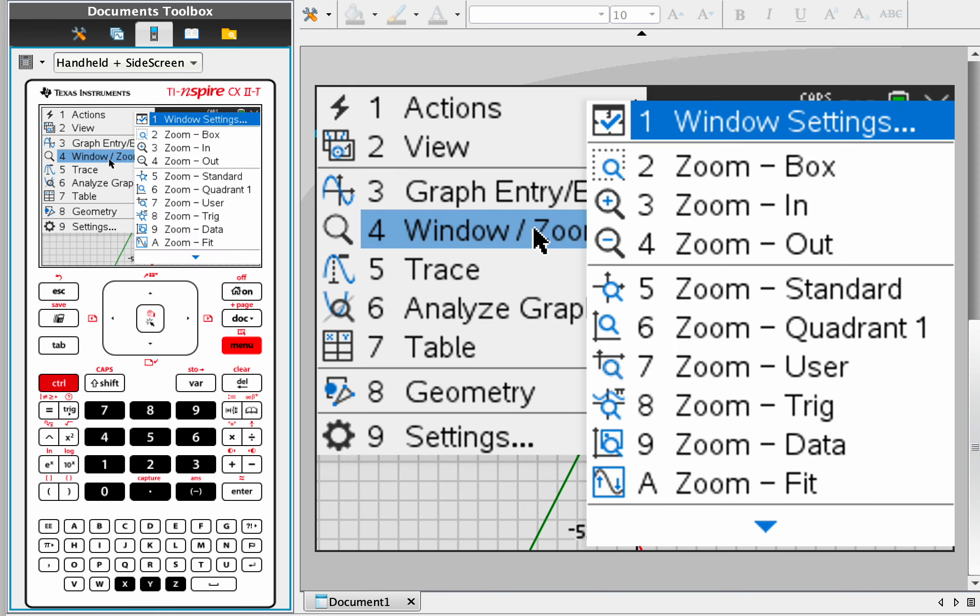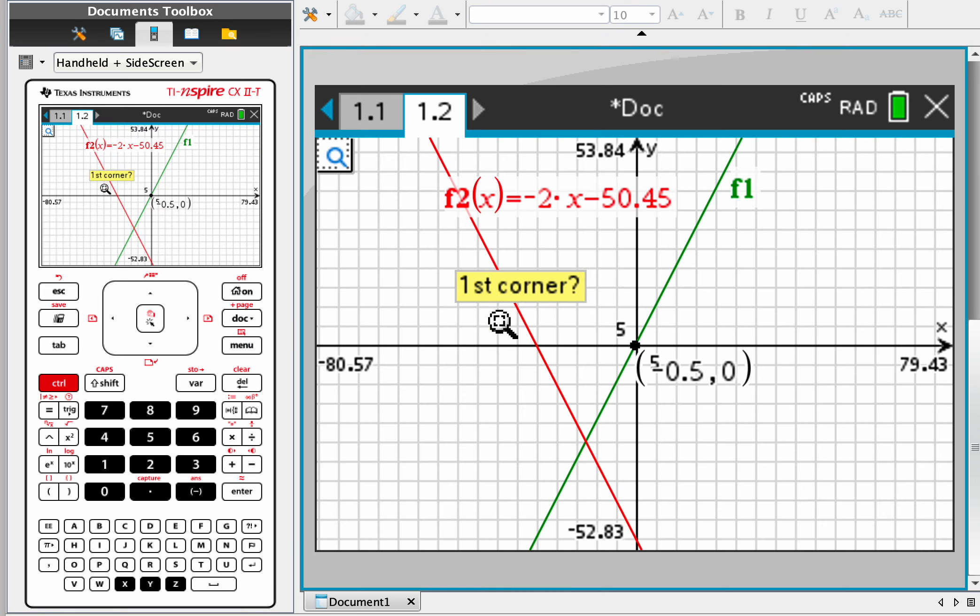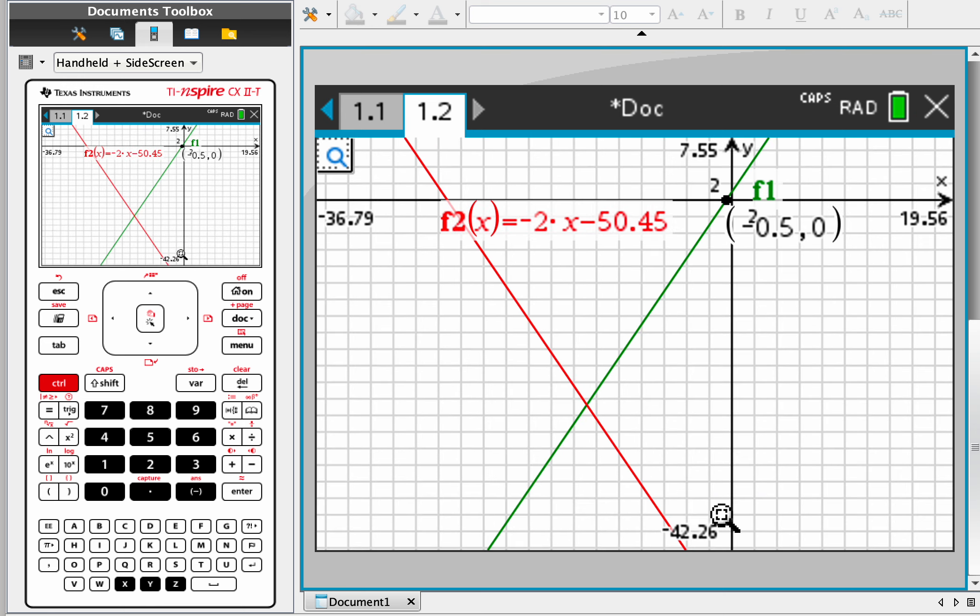But there's a lot of other options, like zoom in, zoom box. So zoom box is kind of cool. You can just pick the top corner. So say the corner is over here, and we want to go to this corner. So we just see that part of the screen.